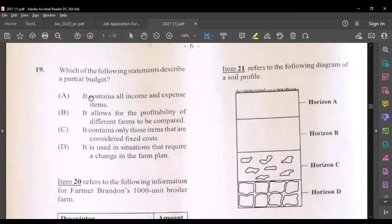Question nineteen, which of the following statements describe a partial budget? It contains all income and expense items, no that would be a complete budget. It allows for the profitability of different farms to be compared. It contains only those items that are considered fixed costs. It is used in a situation that require a change in the farm plan. Yes, D was the most suitable answer here.